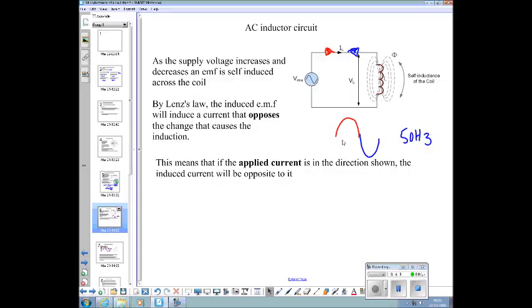When it hits the top, it's not changing at all, so no induced EMF. Down through zero, it's changing at its fastest rate, so we get a big EMF induced. So we get self-inductance in the coil. Because it's connected to a change in voltage, it's inducing its own EMF. By Lenz's law, the induced EMF will induce a current that opposes the change that is causing the induction.